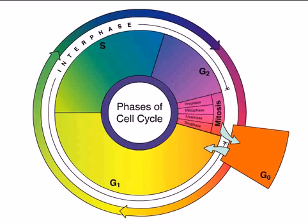There are four true stages of the cell cycle: G1, S, G2, and M.